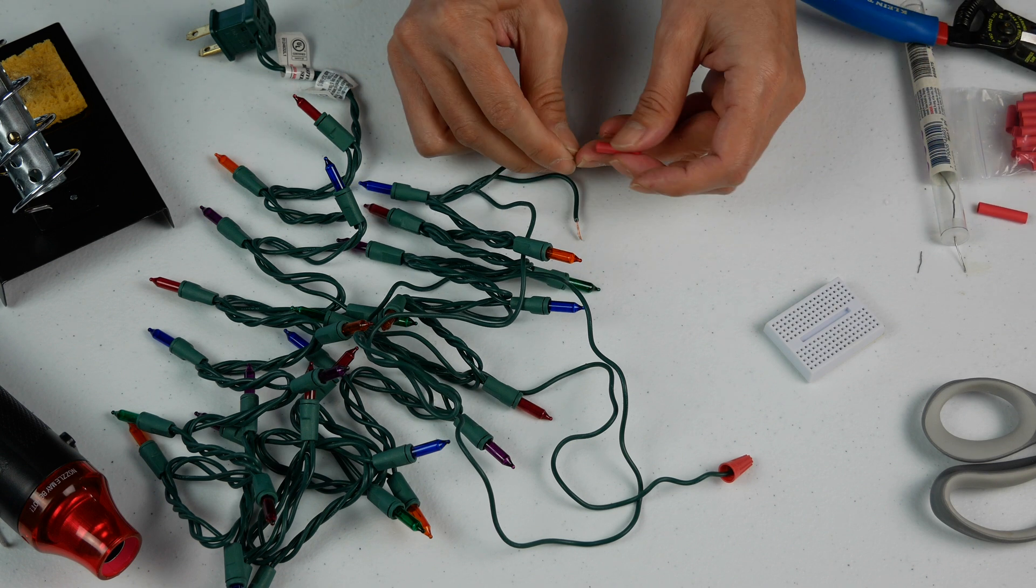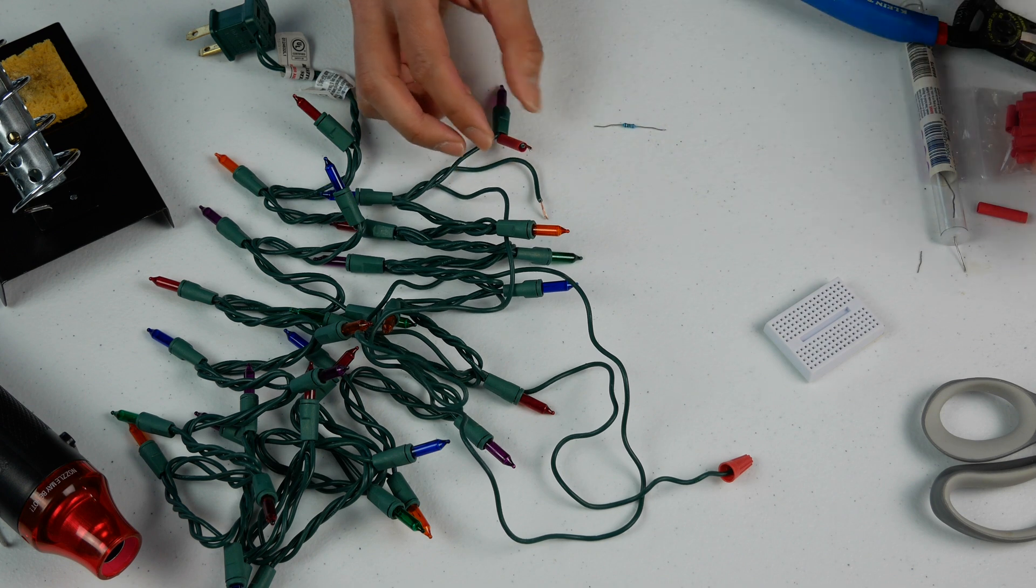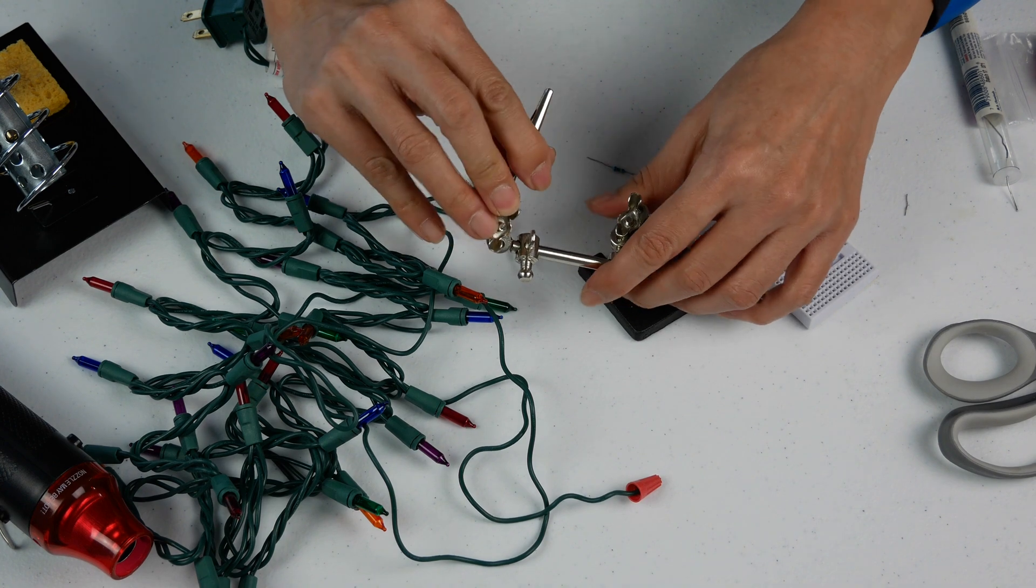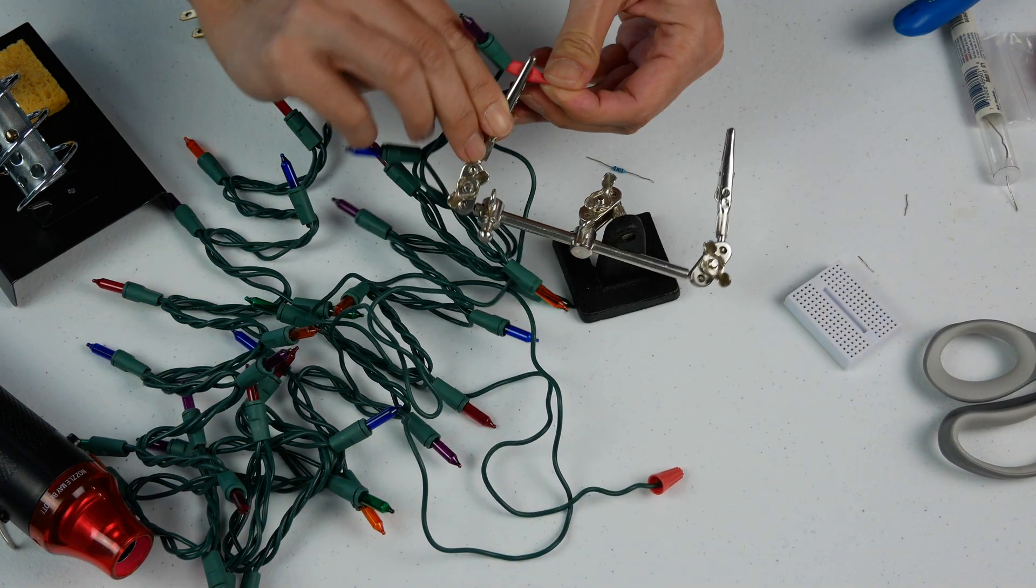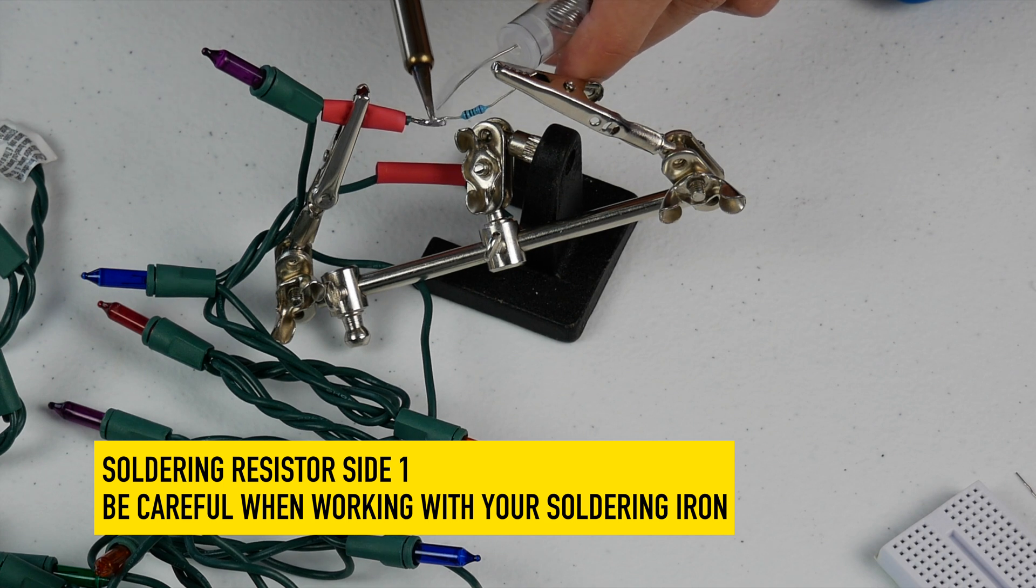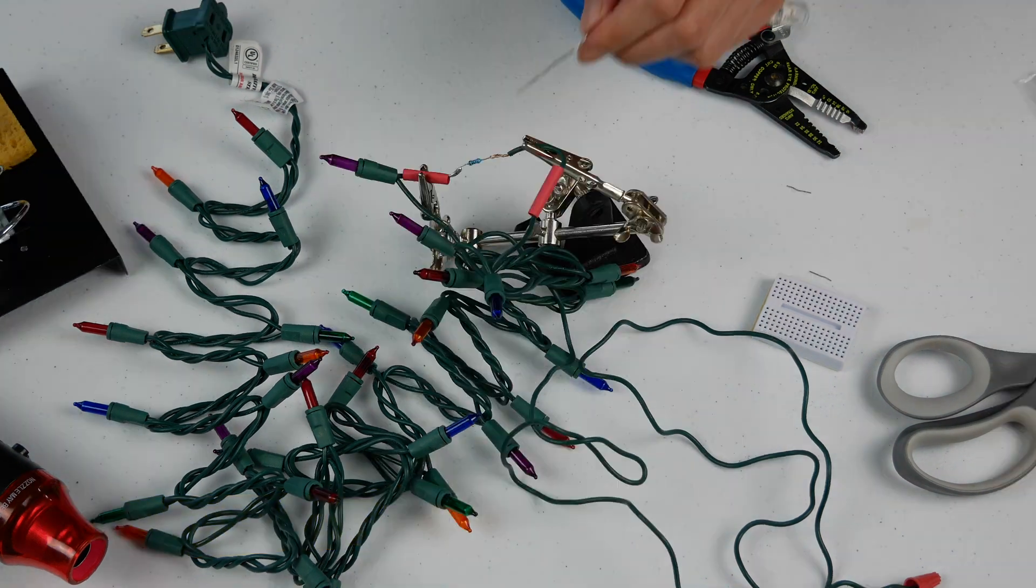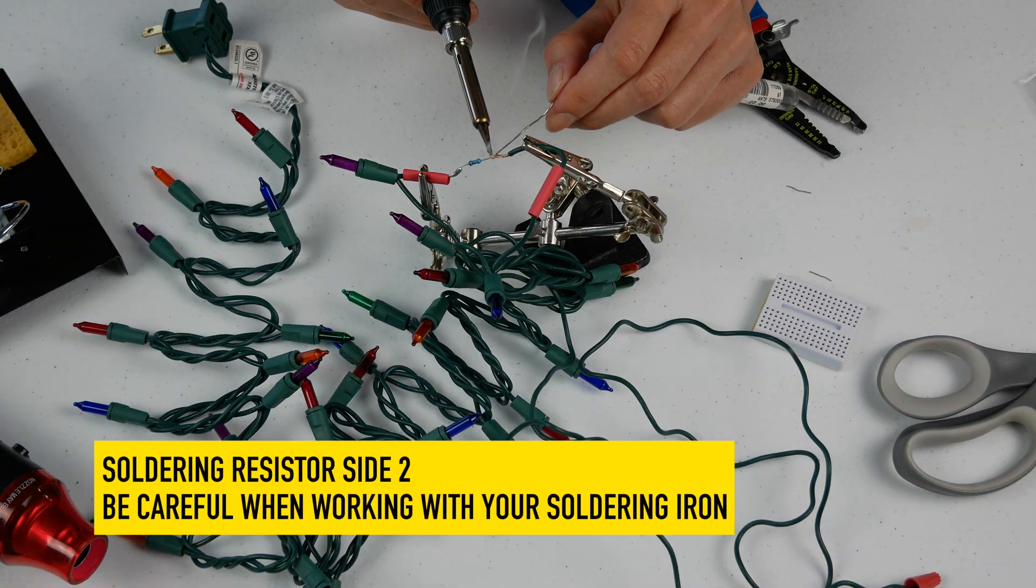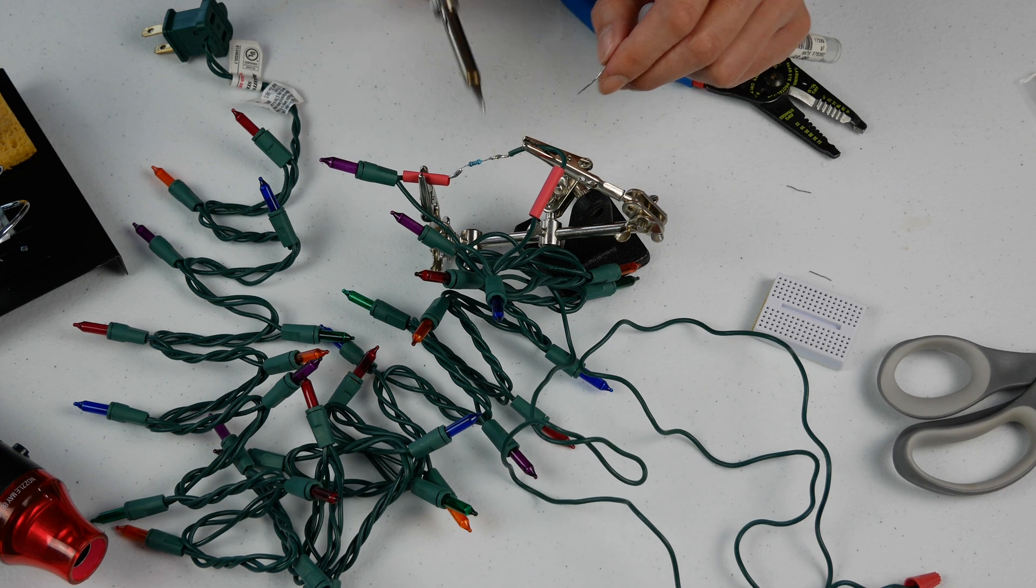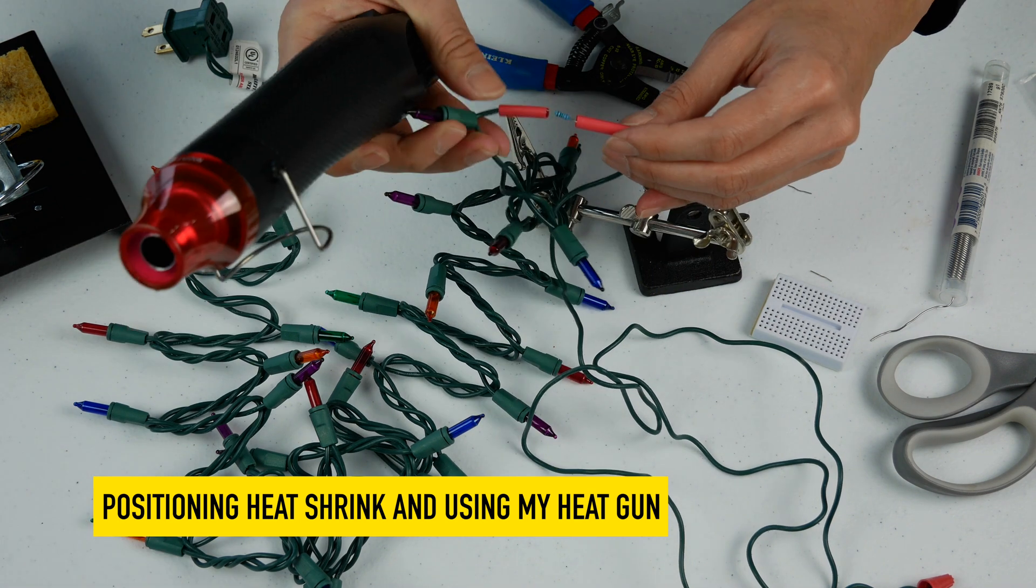Then you want to thread the heat shrink over before you solder. Do the heat shrink first on both sides. I have a little tool that helps me hold the wires in place. So solder that together. Now I can take my heat wrap and I'm going to heat shrink this together.